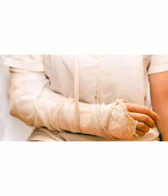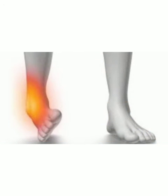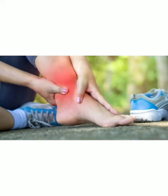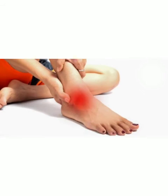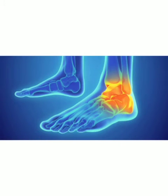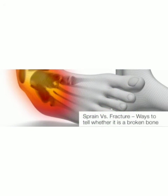Uske baad hamen patient ko doctor ke paas le jaana hai jisko fracture hua ho ya sprain hua ho. Sprain yaad hai — yeh ek twist hota hai hamare ankle mein ya hamare wrist mein. Joint twist ho jaata hai, wahan joint swell up ho jaata hai, yaani woh phool jaata hai aur bahut hi painful hota hai. Us waqt hum ek elastic bandage us joint ke gird wrap kar sakte hain taake uski movement rok sake.